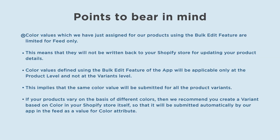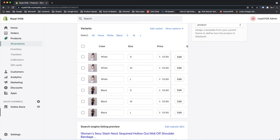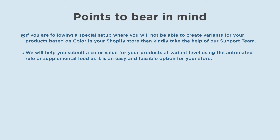Points to bear in mind: color values assigned using the bulk edit feature are limited to the feed only — they will not be written back to your Shopify store for updating your product details. Color values defined using the bulk edit feature will be applicable only at the product level and not at the variant level, meaning the same color value will be submitted for all product variants. If your products vary based on different colors, we recommend creating a variant based on color in your Shopify store itself, so it will be submitted automatically by our app in the feed. If you are following a special setup where you cannot create color variants in Shopify, please take the help of our support team — we will help you submit color values at the variant level using automated rules or a supplemental feed.